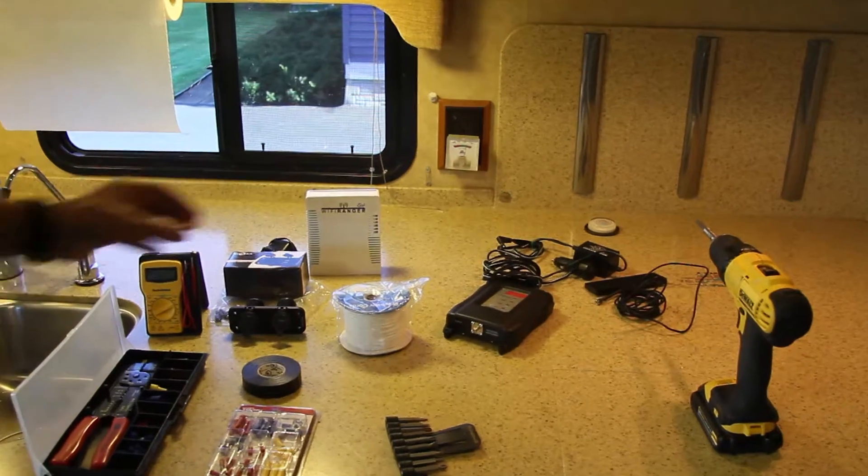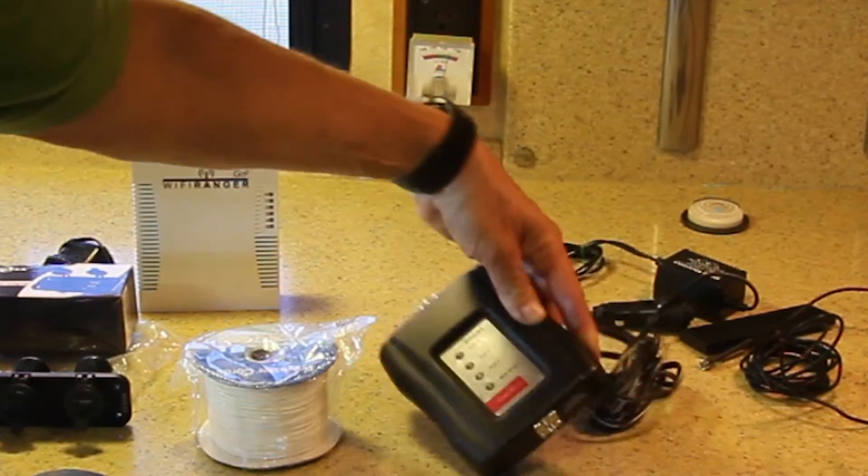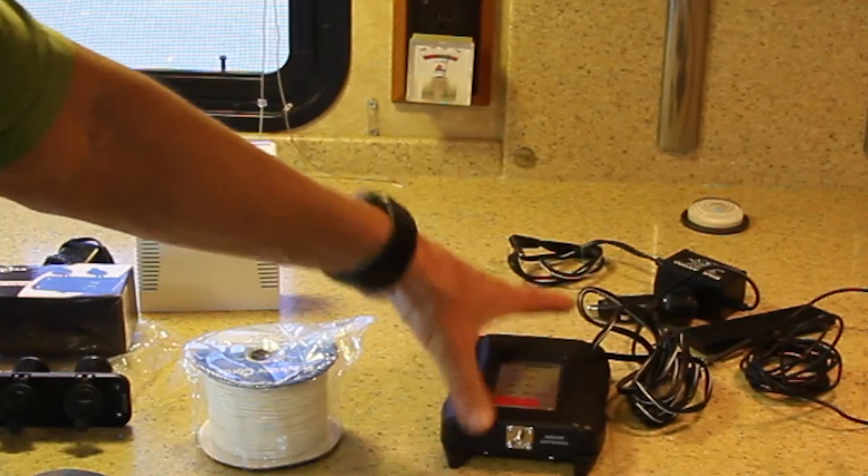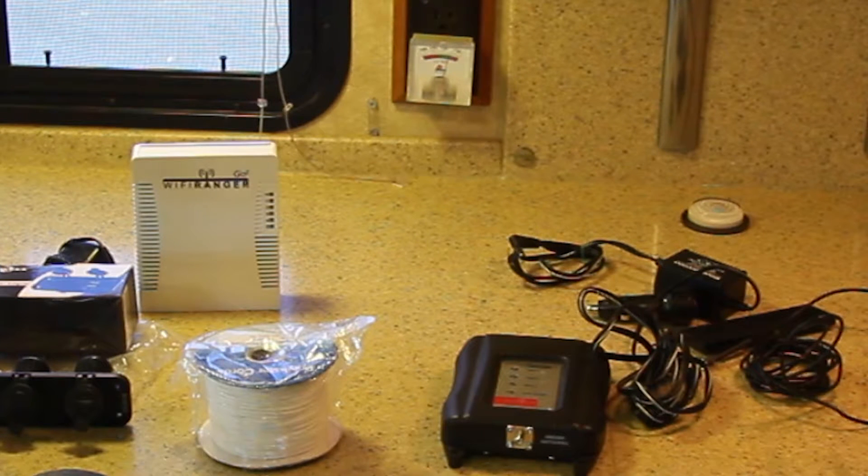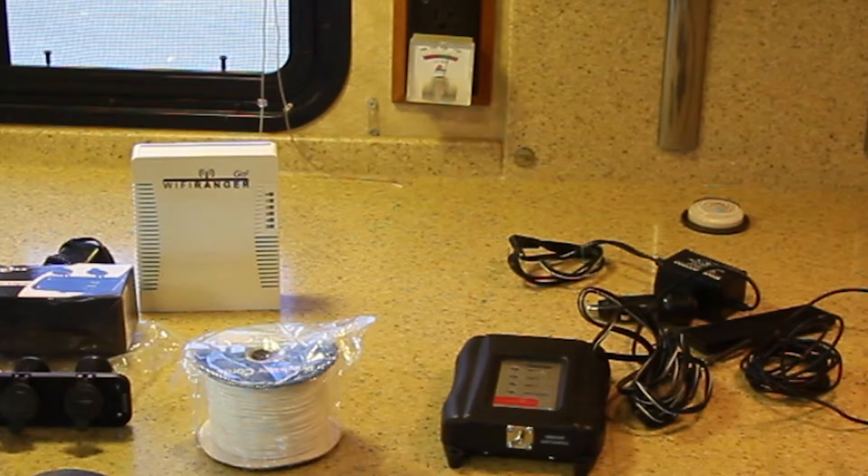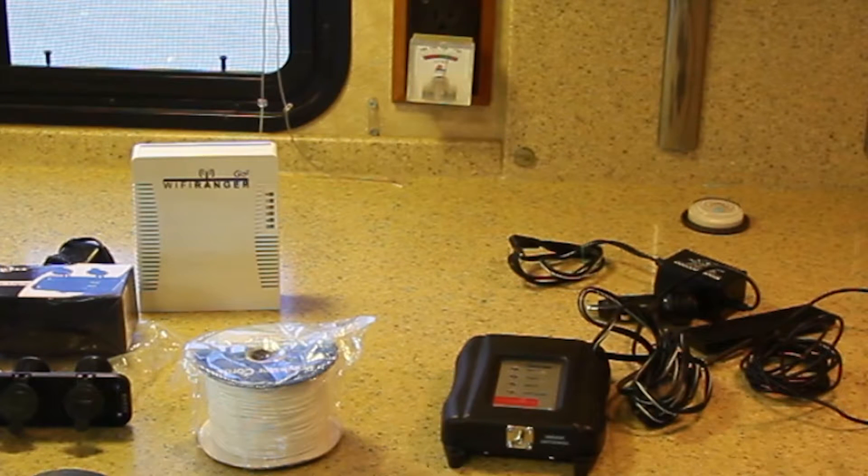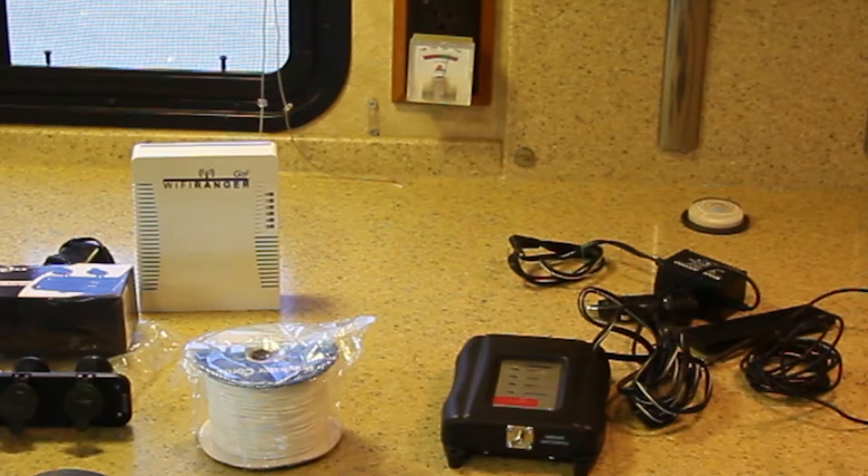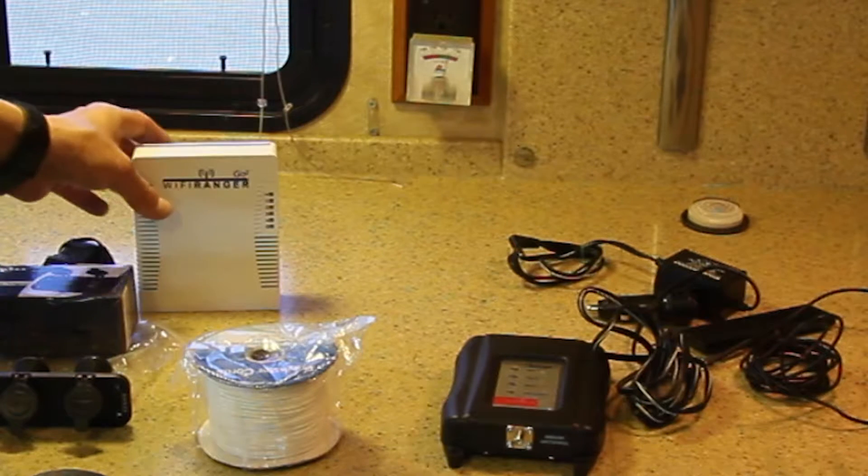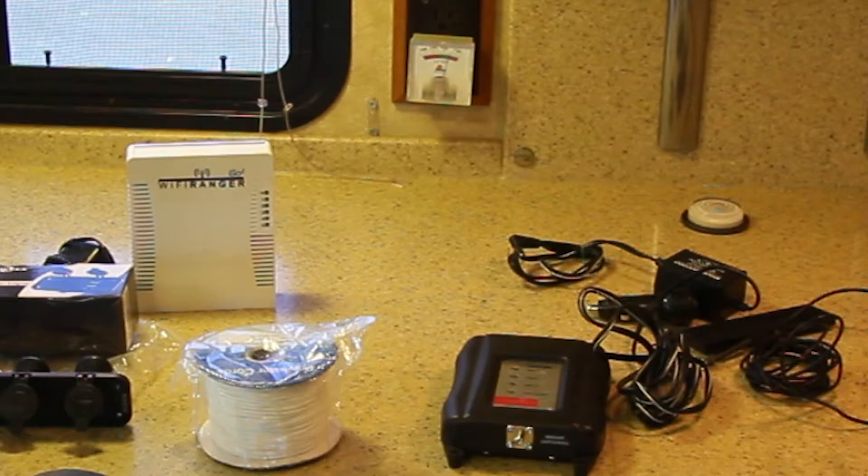The second thing we're installing is the WeBoost cell phone cellular booster. That allows our MiFi and phones to connect and get a couple extra bars of connectivity. Sometimes it's enough to go from 3G to 4G. It's been a good device for voice communication and as a backup with our data plan if we don't have Wi-Fi connection.